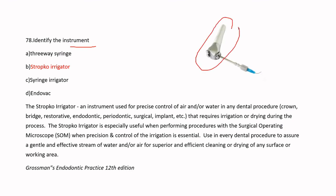The instrument shown is a Stripco irrigator. It resembles a three-way syringe with an irrigator attached. It is used for precise irrigation under surgical operating microscopes, allowing controlled irrigation during microscope-assisted procedures.